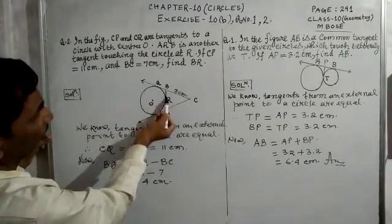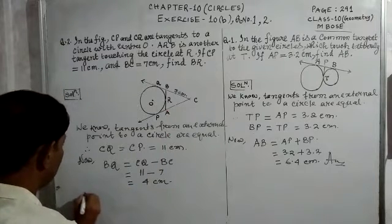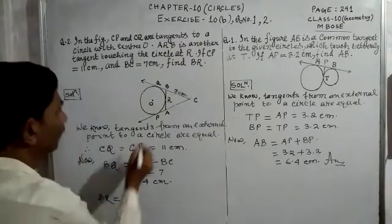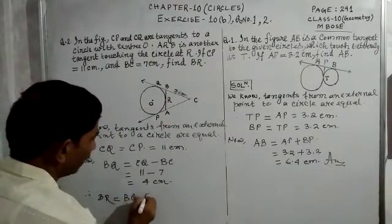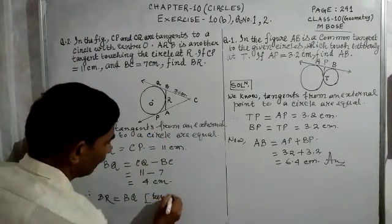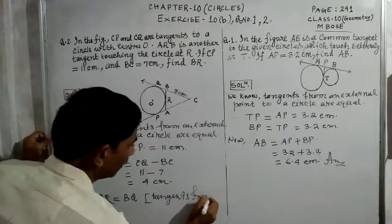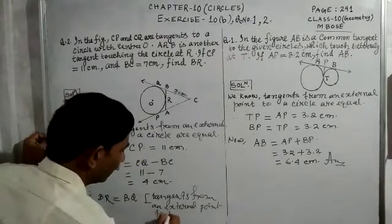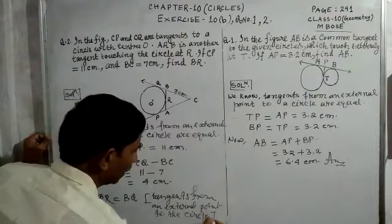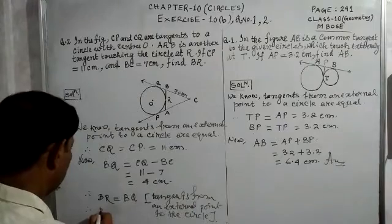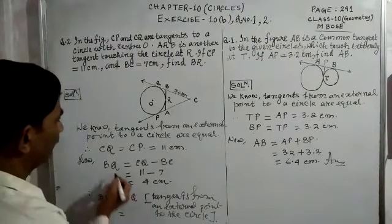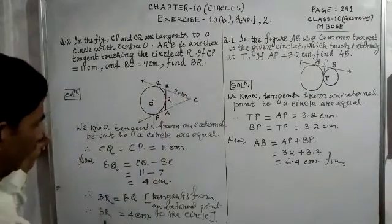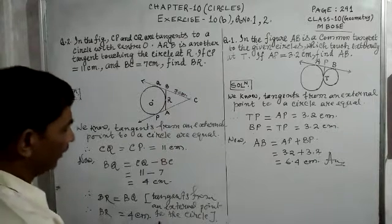From point B, BQ is one tangent and BR is another tangent to the circle. So by the same reason — tangents from an external point to a circle are equal — therefore BR is equal to BQ. The value of BQ is 4 centimeters, so BR is equal to 4 centimeters. That is the answer.